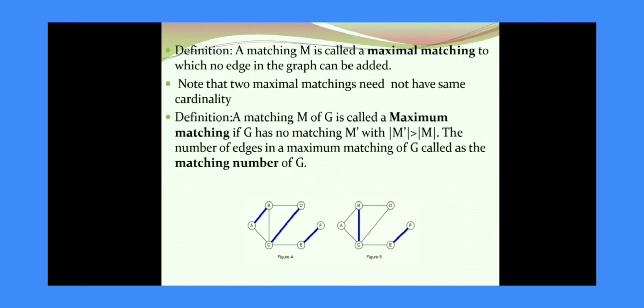The next definition is: a matching M is called a maximal matching to which no edge in the graph can be added. Let us consider the first figure. It is maximal. How? Can we add any edge to the matching?